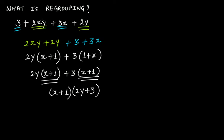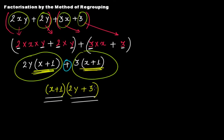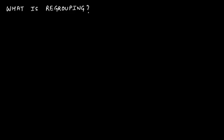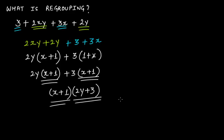Now you have two terms and the factor x plus 1 is common. So this can be written as x plus 1 multiplied by 2y plus 3. We have regrouped. You now have two factors: x plus 1 and 2y plus 3. Since you have written the product of two factors — x plus 1 multiplied by 2y plus 3 — this is the factorization of this algebraic expression. We have the same answer as before.